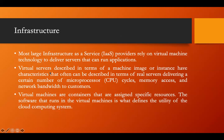Virtual servers, described in terms of machine images or instances, have characteristics that can be described in terms of real services — delivering a certain number of microprocessors, CPU cycles, memory access, and network bandwidth to the customer. When we talk about infrastructure as a service, we provide the hardware including the networking part.